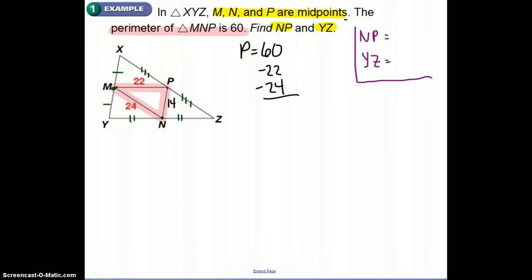Again, I'm just trying to get information that might be helpful later on. So, let's focus on now, NP was one of the things they wanted us to find when we found this 14. That last piece was NP, so that's going to be 14.